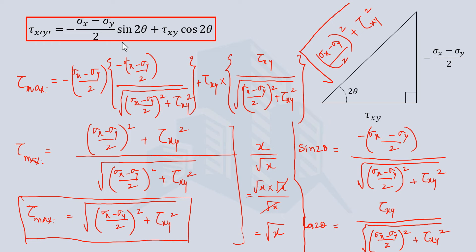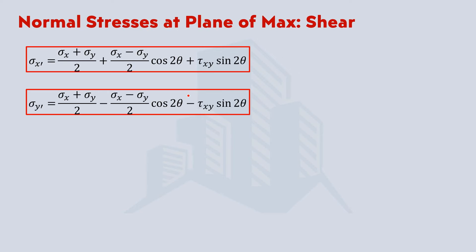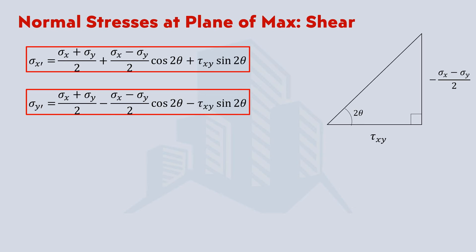The next thing we are going to calculate is the normal stress at the plane where we have the maximum shear stress. So we are looking for the normal stresses at a plane of maximum shear. Recalling the equation to calculate the normal stress at the x-y plane which is rotated by theta counter-clockwise, if we use this right angle triangle — which was derived for the plane of maximum shear stress — then we can have the values of sine 2 theta and cos 2 theta the same as obtained previously, and put them into these equations.